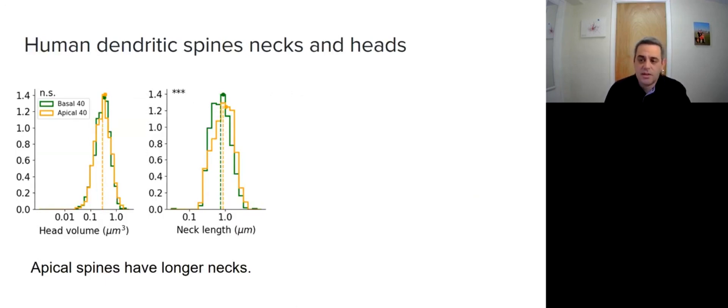The separation of head and neck enables us to investigate them separately. Here, we compared spines from basal and apical dendrites in a 40-year-old human individual. We showed that basal and apical spines have the same distribution of heads, but the apical spines' necks are longer.